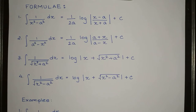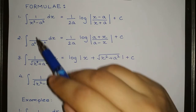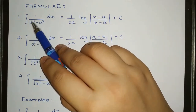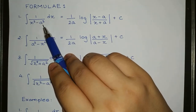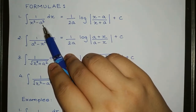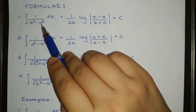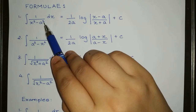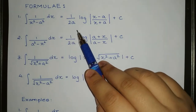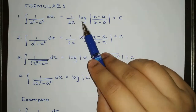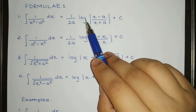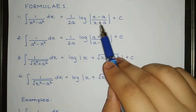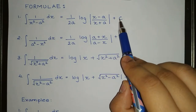You have to remember these four formulae — don't forget them. As you solve more and more questions, they will automatically be memorized. So let's start with the first formula: integration of 1 divided by x² minus a² is equal to 1 divided by 2a, log of (x minus a) divided by (x plus a), plus c.